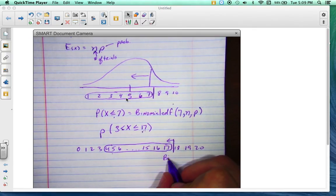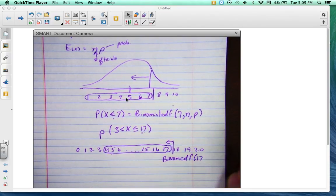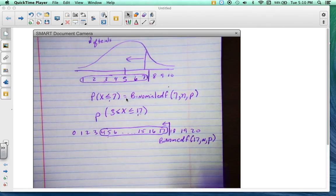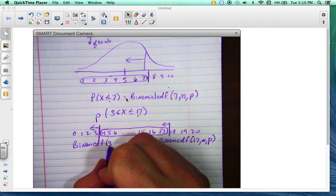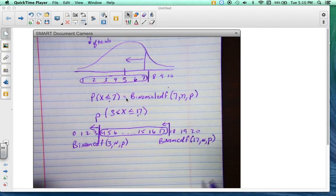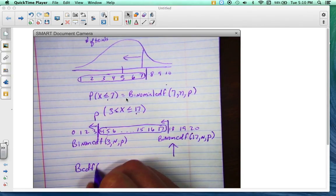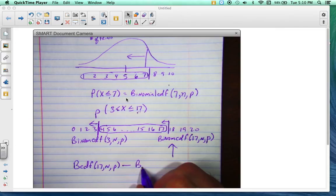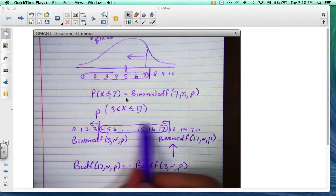That means I have a binomial CDF here. So this is binomial of 17, and then whatever n and p are. And then this right here would be to the left, so this is a binomial CDF of 3, n, p. So whatever the n is and p is I will probably give you. So now what you do is you take the largest one, which is this, so binomial CDF of 17, n, p, minus the smaller one, binomial CDF of 3, n, p. And that will give you the probability of everything in the middle.